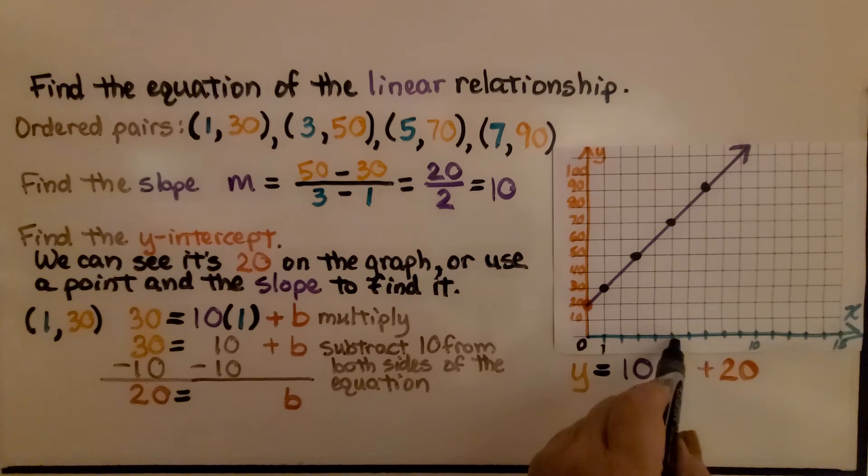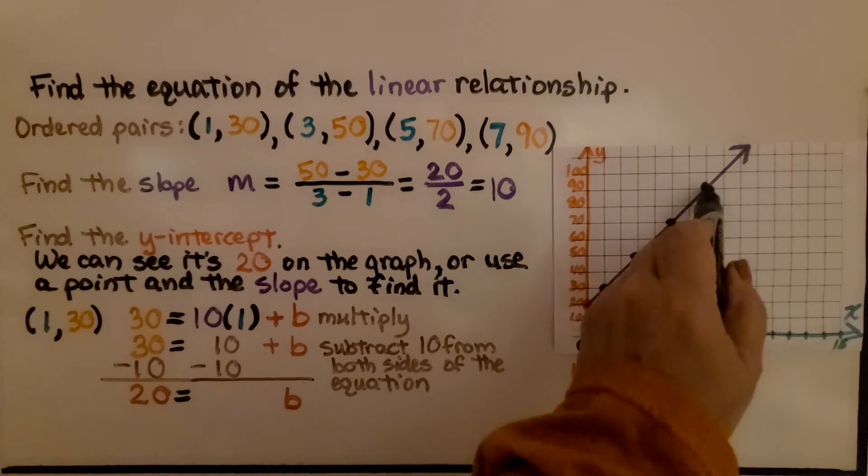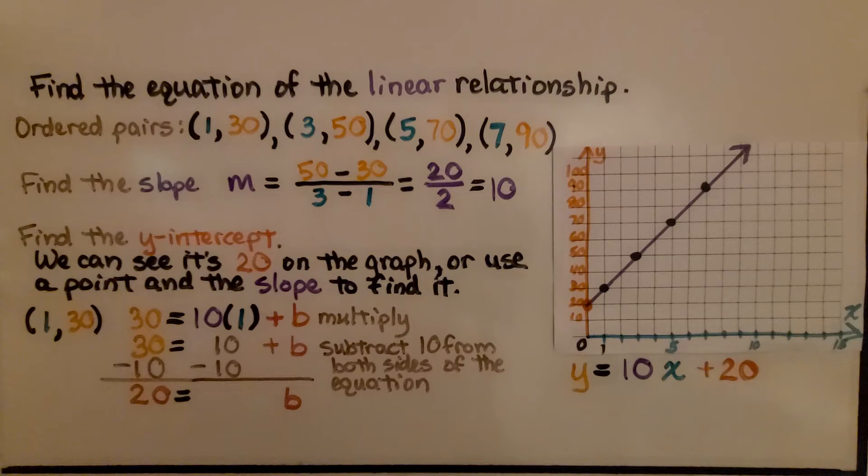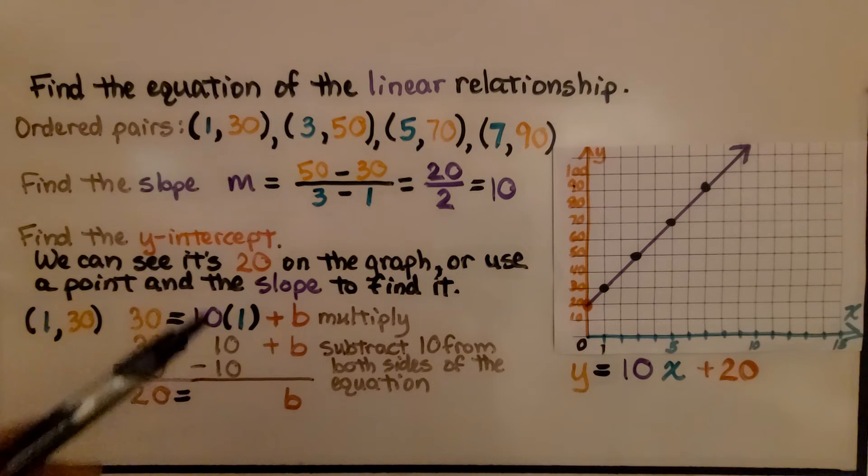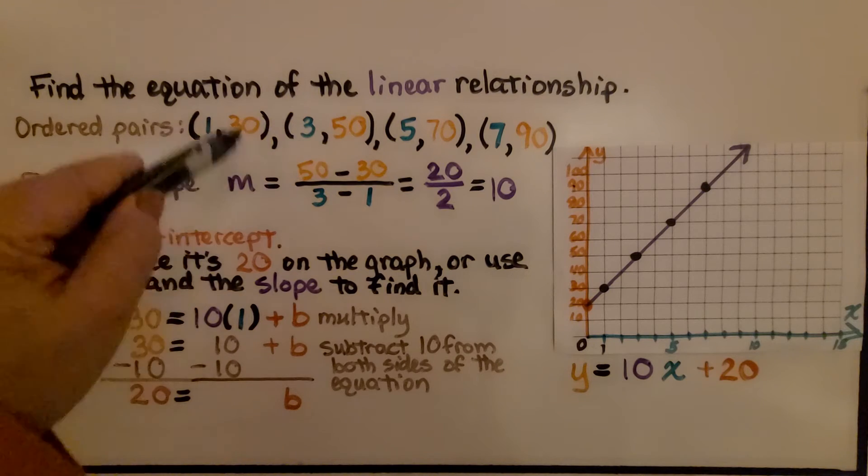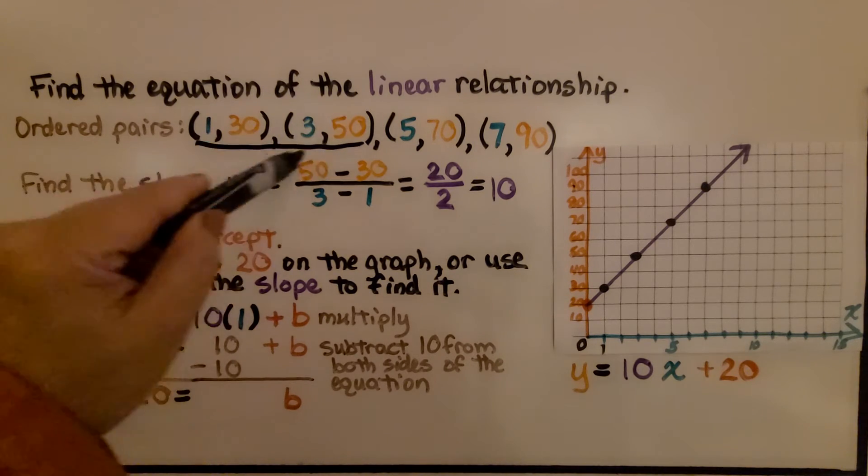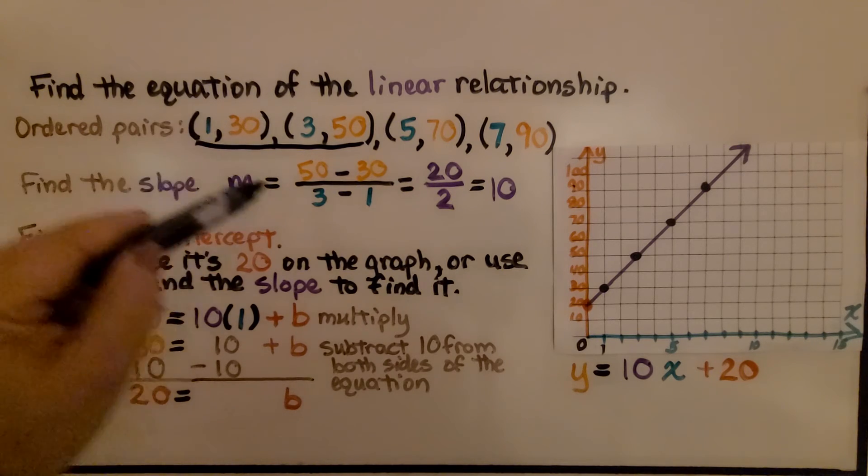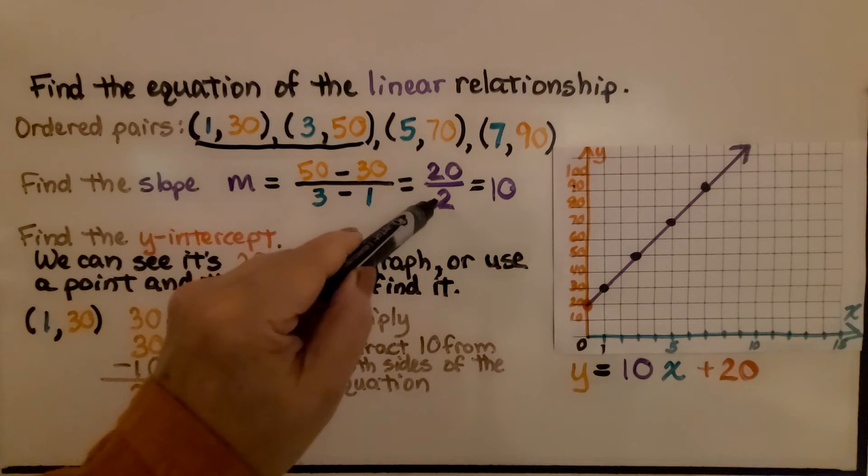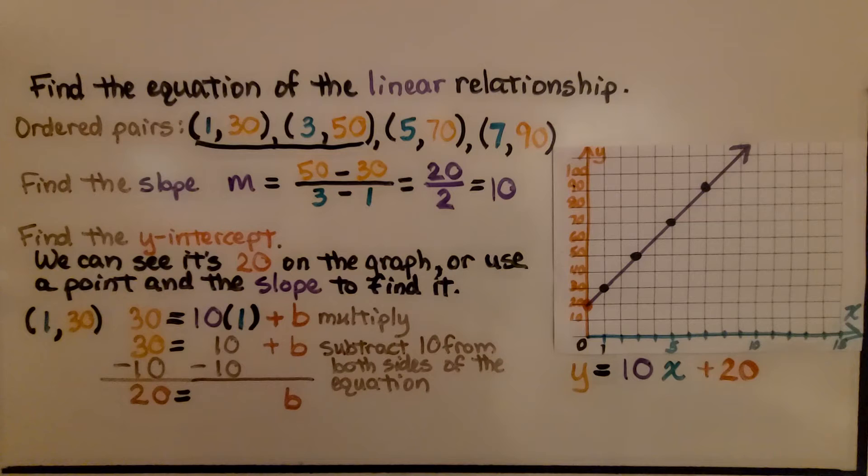And the next point is, if that's 5, that's 6, that's 7 for x and 90 for y. We find the slope m using the slope formula. We choose two of the ordered pairs. I chose these two. So we have 50 minus 30 over 3 minus 1. That gives us 20 over 2, which simplifies to 10. We know the slope. The rate of change is 10.